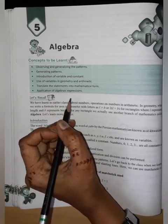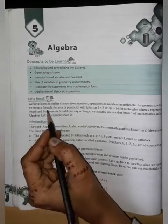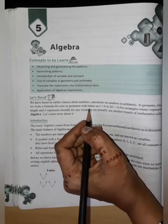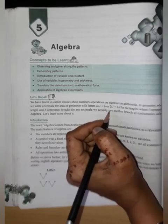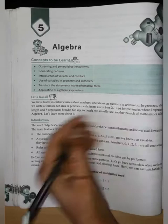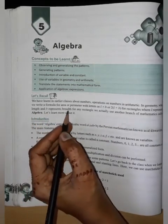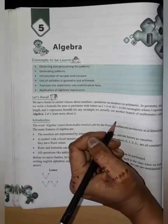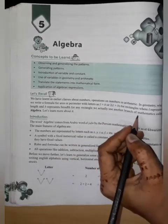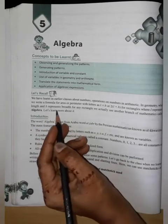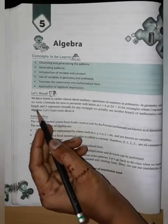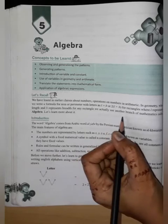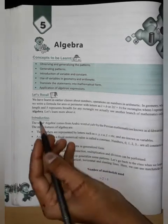We have learnt in early classes about numbers, operations on numbers in arithmetic and geometry. When we write a formula for area or perimeter with letters, as L into B or 2 bracket L plus B for rectangles, where L represents length and B represents breadth for any rectangle, we actually used another branch of mathematics called algebra.